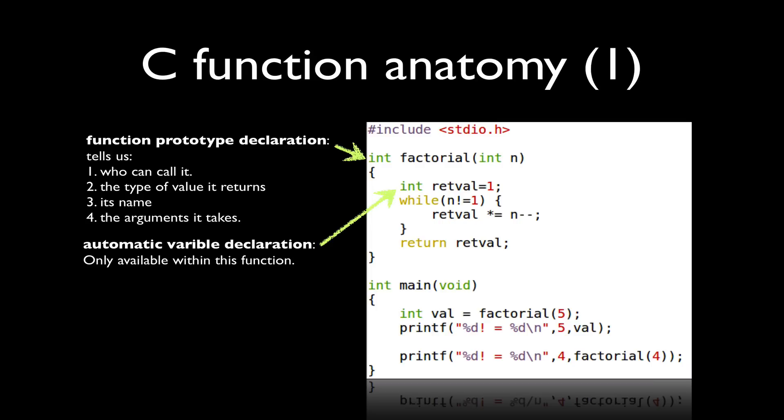So in my factorial function, you'll see a local variable called retval of type int, which is initialized to 1. Every time I run this function factorial, an instance of retval becomes available, and becomes unavailable after we return from the function.